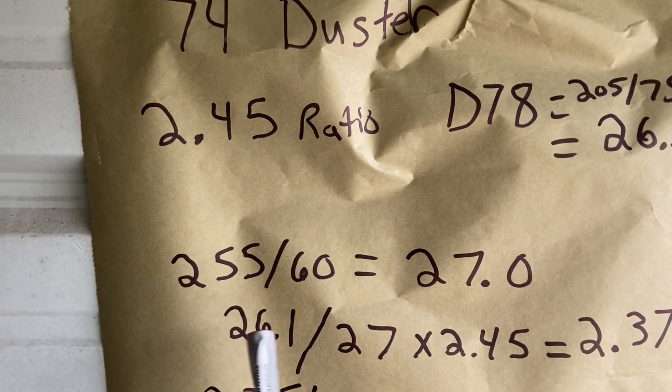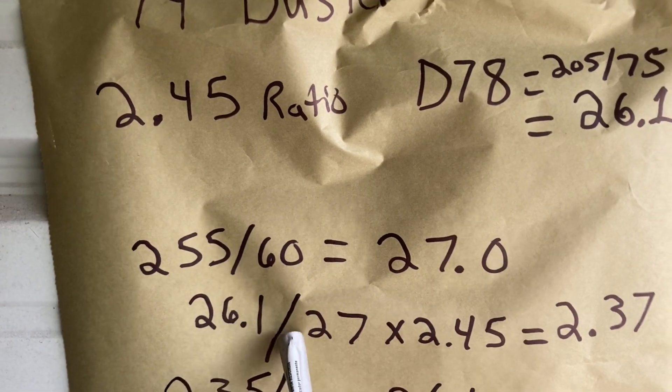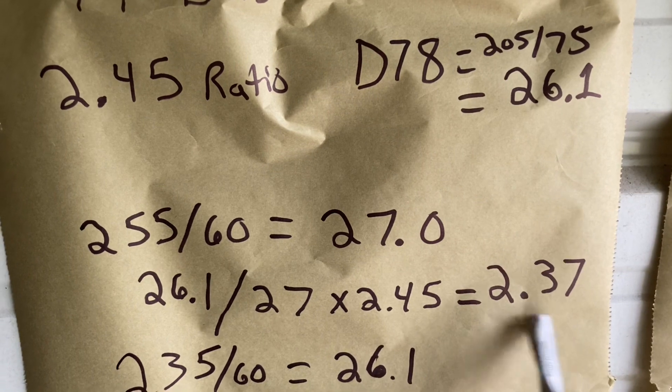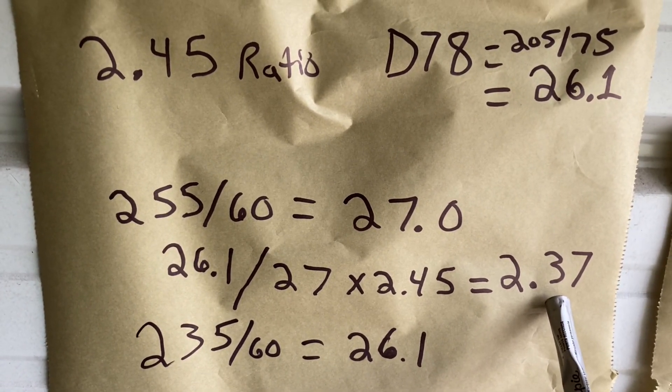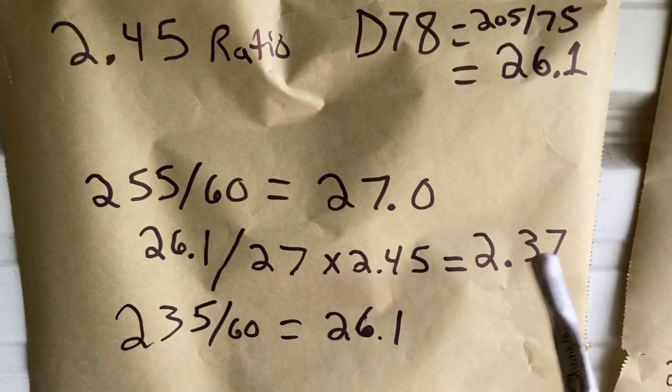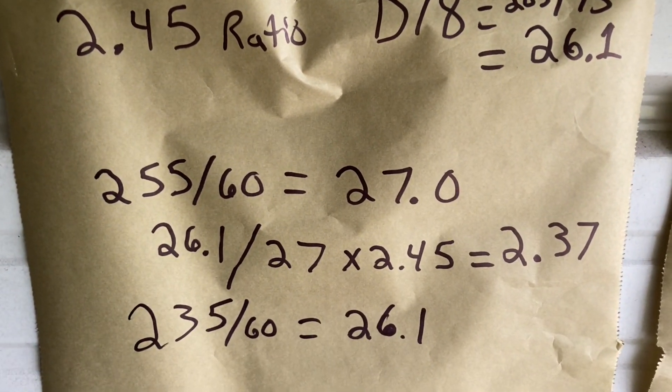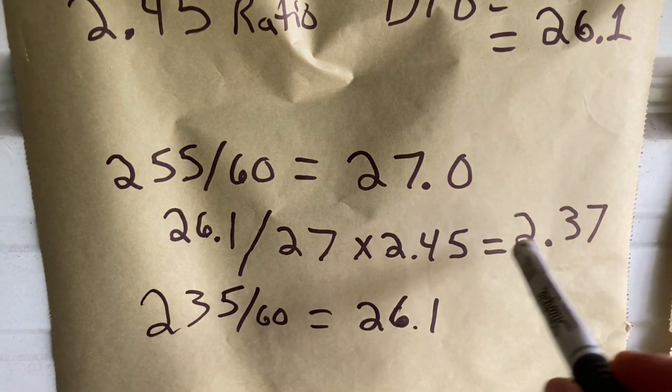So right here, you're going to take your old ratio or your old diameter, divide it by your new diameter and multiply it by 2.45. That takes a little bit of your gearing away, which is not going to help the fact that you already have too high of a gear. What you might consider in this situation, if you want those big tires, is to go ahead and do a gear change. Maybe a 3.55 would be better here. That would give you the better ratio.